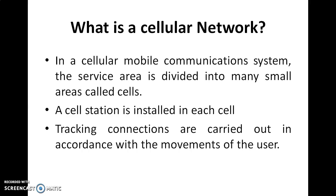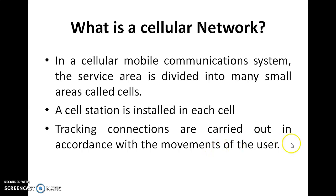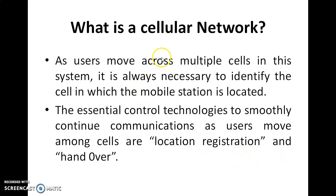What is a cellular network? In a cellular mobile communication system, the service area is divided into many small areas called cells, and a cell station is installed in each cell. Tracking connections are carried out in accordance with the movements of the user. As the user moves across multiple cells, it is always necessary to identify the cell in which the mobile station is located.